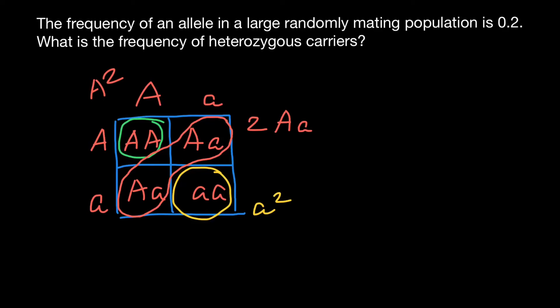Now we can solve this problem because we know the frequency of the recessive allele. It doesn't matter which one is 0.2, dominant or recessive. The answer is going to be the same.